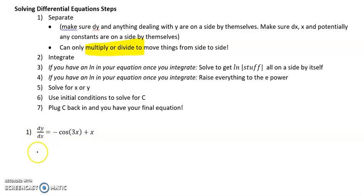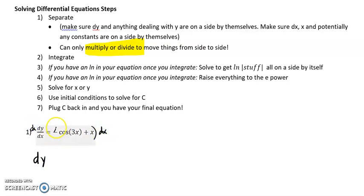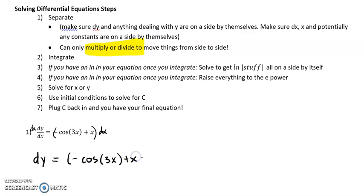This one actually doesn't look too bad. It looks like dy I can just get on the side by itself — I can multiply both sides by dx. So then we have negative cosine of 3x plus x, dx.